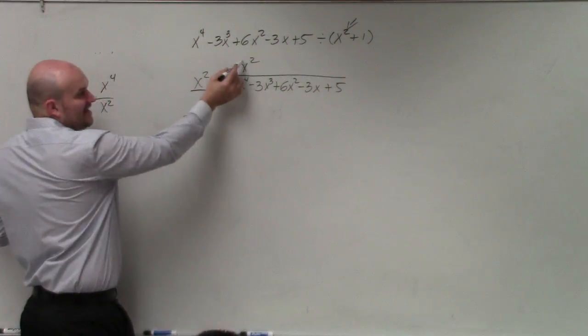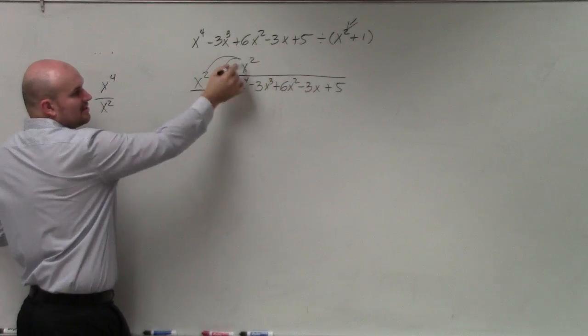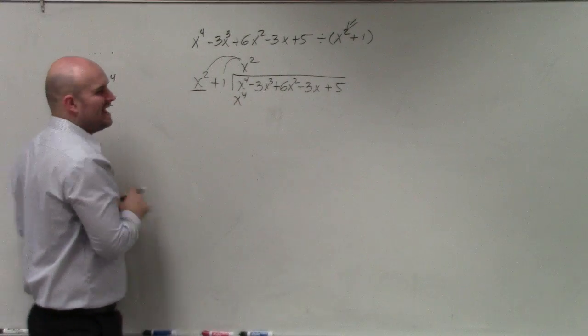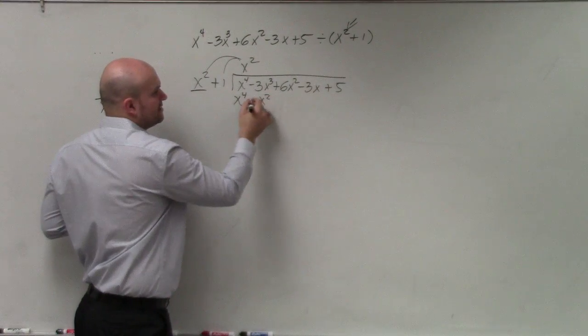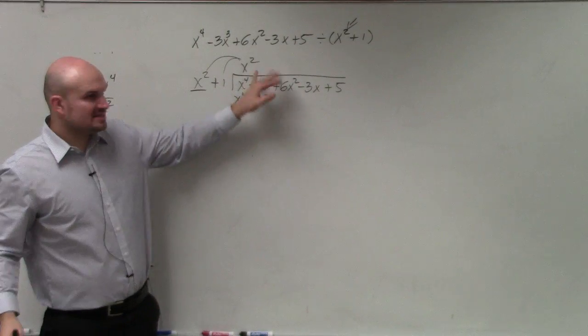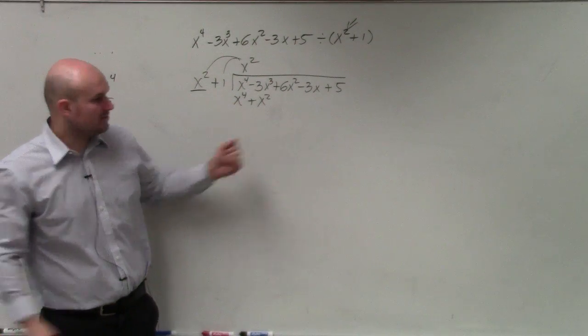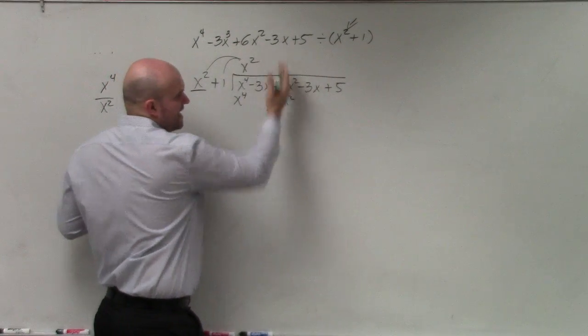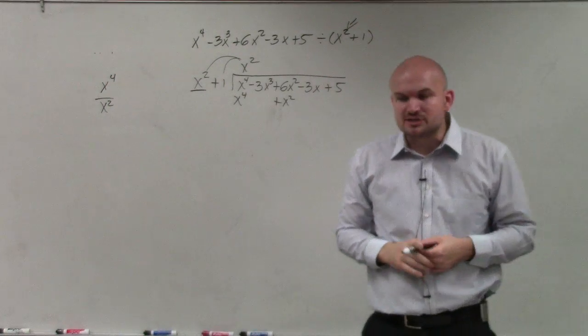Then I take this value x squared and I multiply it by both terms. So x squared times x squared is x to the fourth. x squared times 1 is x squared. Now, I don't want to write that here because I can't subtract x cubed and x squared. So what I need to do is I need to move that over here because those are like terms.